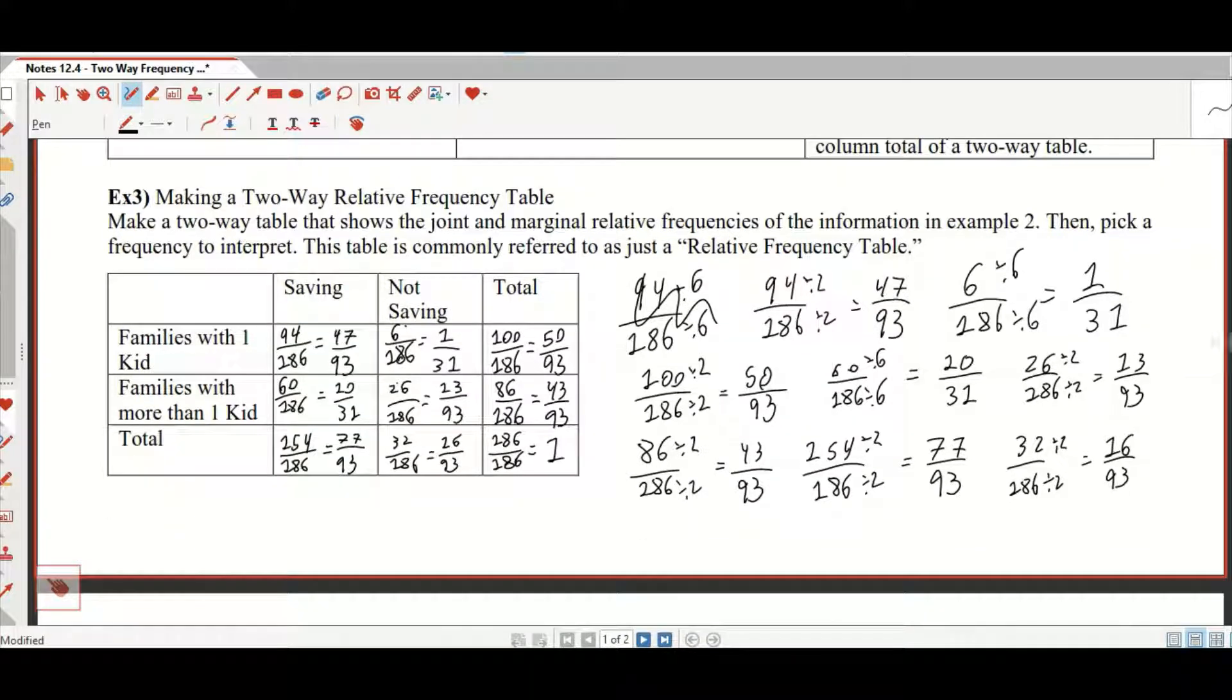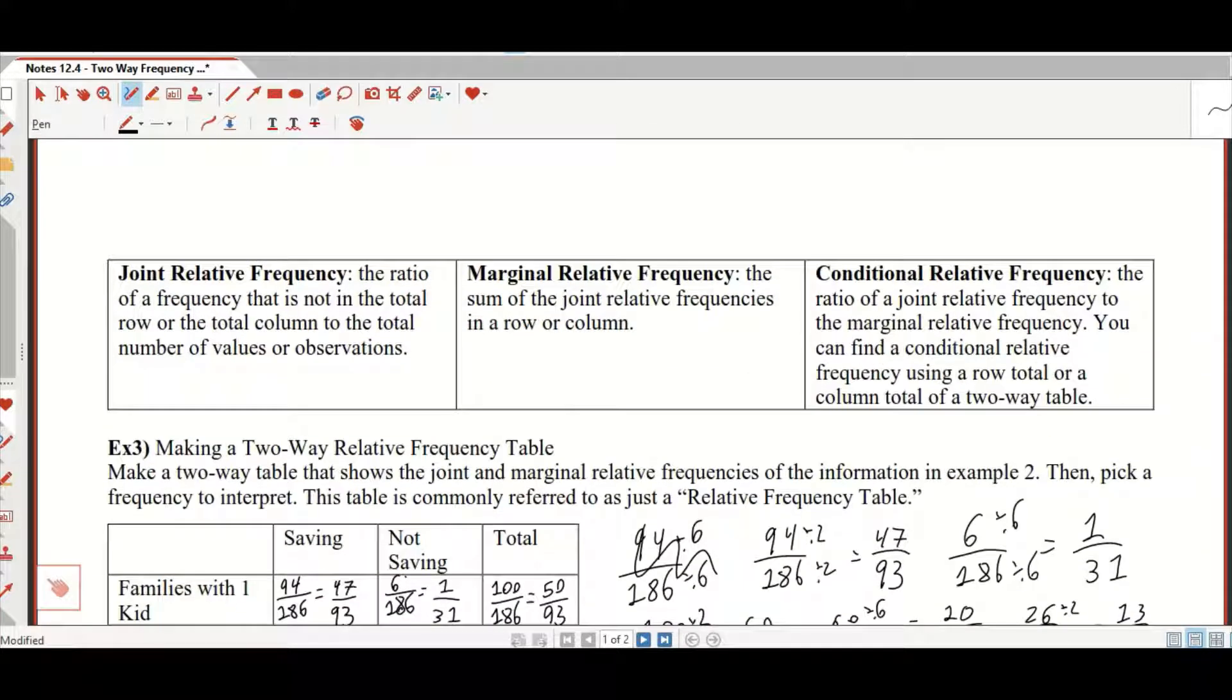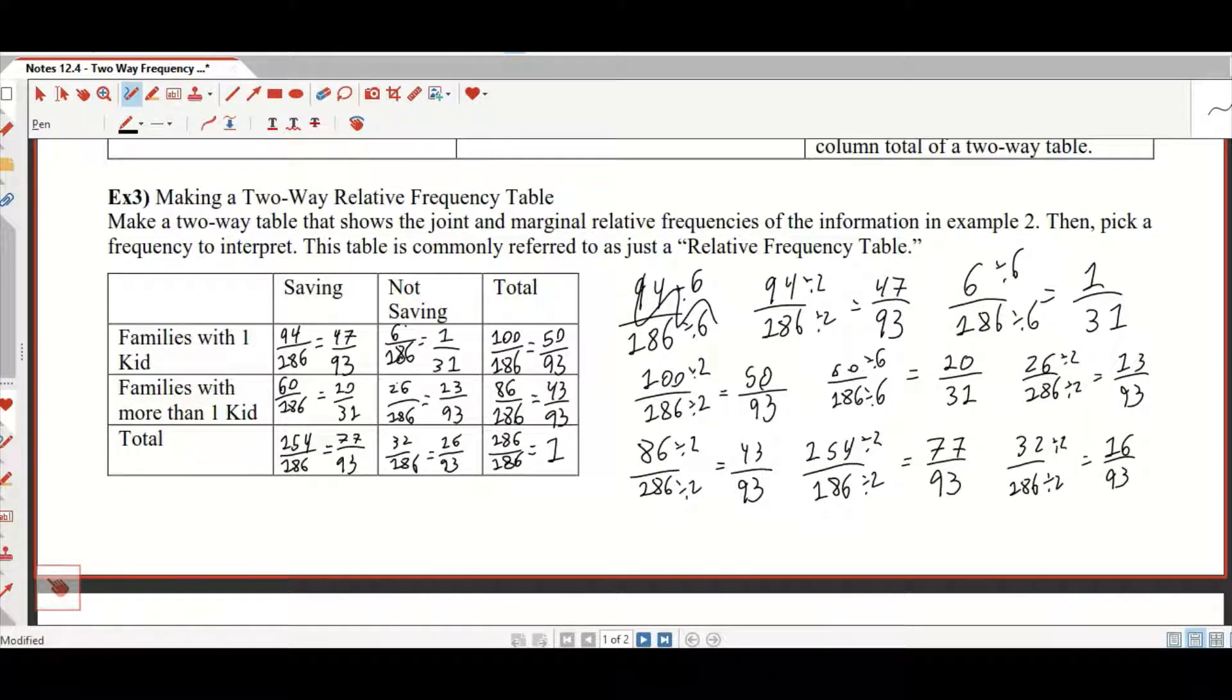Pick a frequency to interpret. Again, honestly, we've really interpreted them. So you've got the conditional relative frequency, the ratio of a joint relative frequency to the marginal relative frequency. Find conditional relative frequency by using a row or a table or a column. That is, how many of the families with one kid were not saving? So if I just knew, if I knew that somebody was a family with one kid, what is the probability that they're not saving? That would be 1 over 31 divided by the total, which is 50 over 93, which is gross. 1 over 31 times 93 over 50. 2 times 93 is 186. 31 times 50 is 1550. 186 divided by 1550, for example, is 0.12. So that's about 12%. So about 12% of the families with one kid aren't saving. More on that in a moment, because we're actually going to do all that.